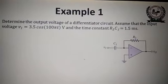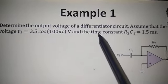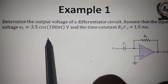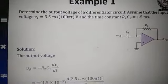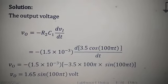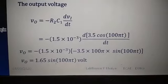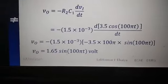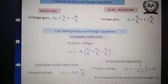For the differentiator circuit, determine the output voltage given input Vi = 3.5cos(100πt) volts and time constant R2C1. The output equation is V0 = -R2C1 × d/dt(Vi). Differentiating 3.5cos(100πt) gives 100π × sin(100πt). So V0 = 1.65sin(100πt) volts.